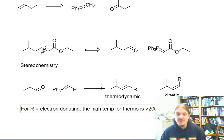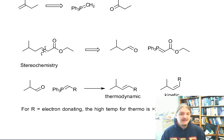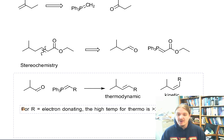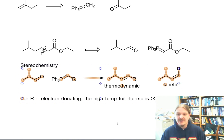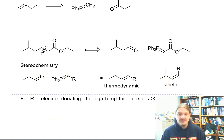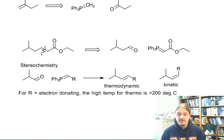For when R is electron donating, the high temperature required to obtain thermodynamics is really high. And the kinetic product forms at room temperature or sometimes even at zero degrees Celsius.